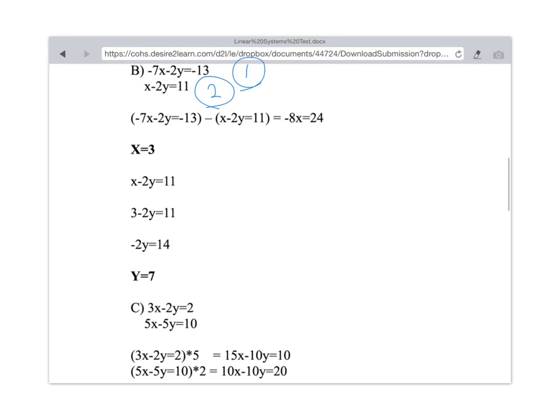You can check to see if those are correct by putting them back into both equations and see if you get the correct answer. Now in this case, if I put x equals 3 and y equals 7 into the left side of the second equation, I'm going to get 3 minus 14, which is equal to minus 11.